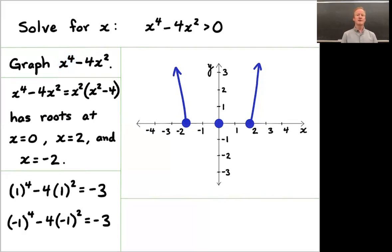The graph is going up as you move right of 2 and left of minus 2. What's happening in the middle in between minus 2 and 2? Let's just pick a couple points and figure it out. If x is 1, you'll have 1 to the 4th minus 4 times 1 squared. That's minus 3. If x is minus 1, you'll have minus 1 to the 4th minus 4 times the square of negative 1. That's also minus 3. So if you input 1, out comes minus 3. If you input minus 1, out comes minus 3.